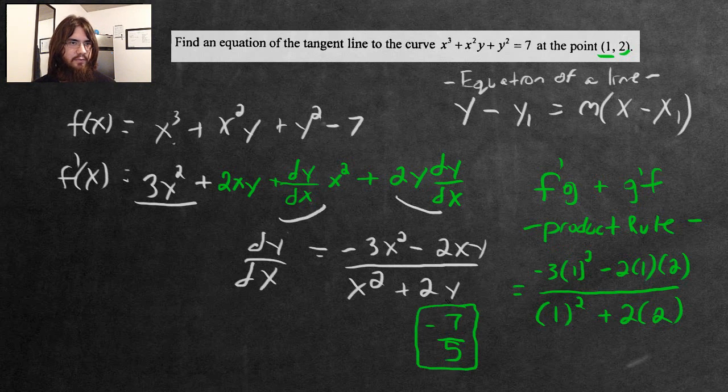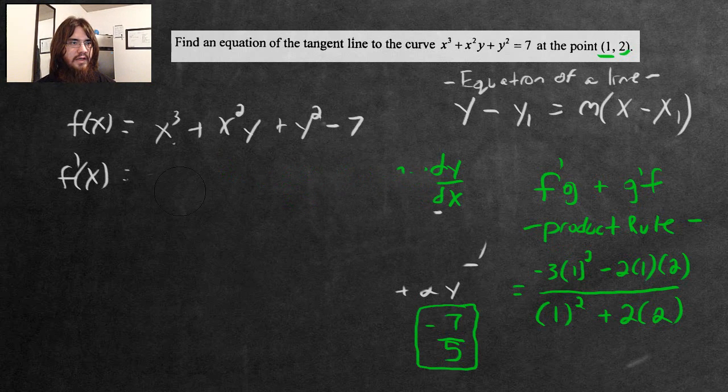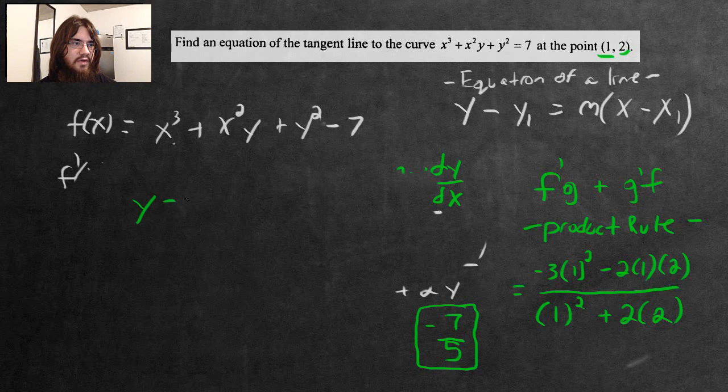We're not quite done yet. Now that we've found the slope, the very last step is where the equation of a line comes into play. We have to do y subtract the first y value, which is 2, equals the m value, which is negative 7 over 5, multiply it by x subtract the first x value, which is 1. And this is the equation of a line.